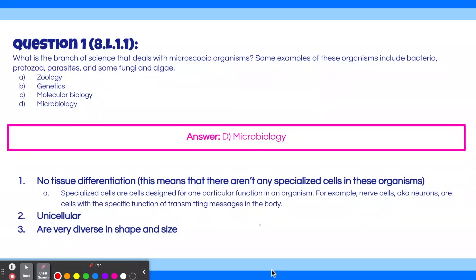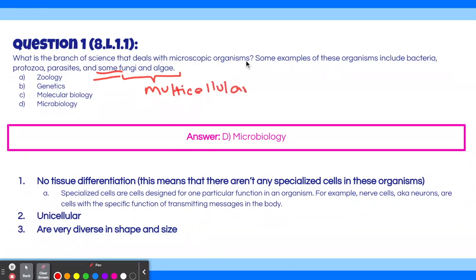also known as neurons, which are cells with the specific function of transmitting messages in the body. In the organisms listed here, they don't have specialized cells, which means they only have one type of cell that does many different functions. The second quality is that they're unicellular. But importantly, this question specifically says some fungi and algae, because fungi and algae are typically multicellular. The last quality is that they are very diverse in shape and size, which makes sense given the many different types of bacteria, protozoa, parasites, and fungi and algae.